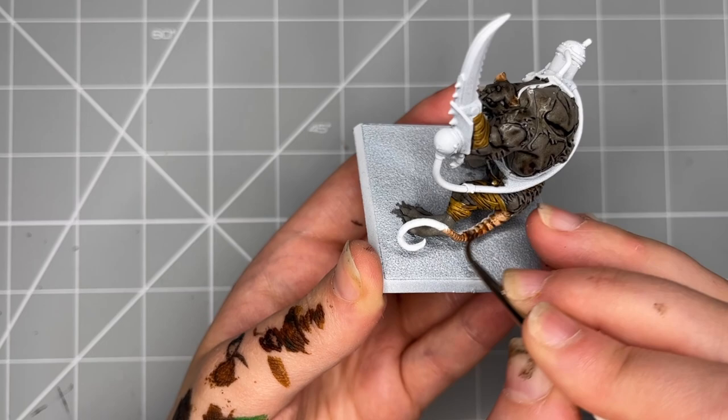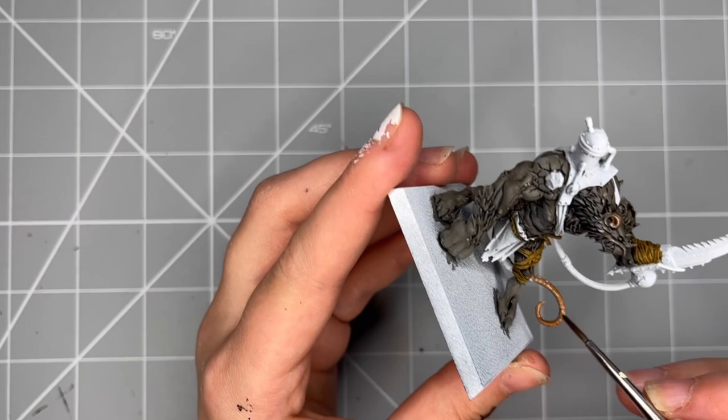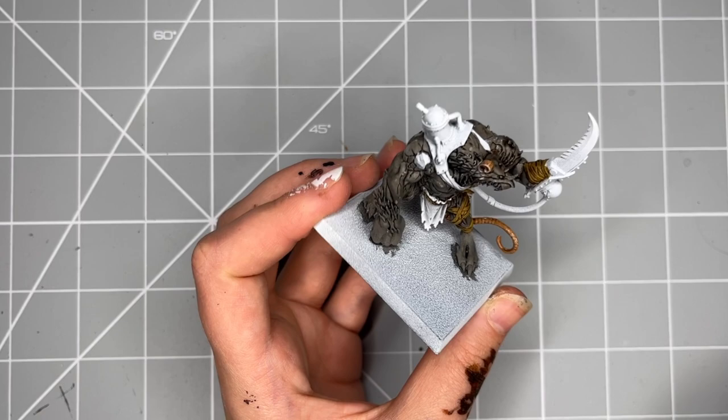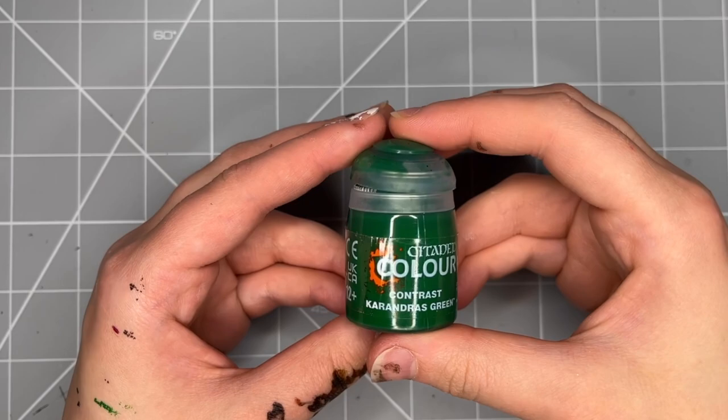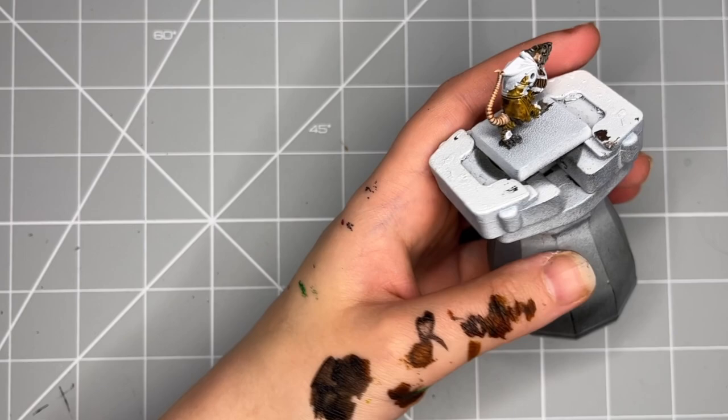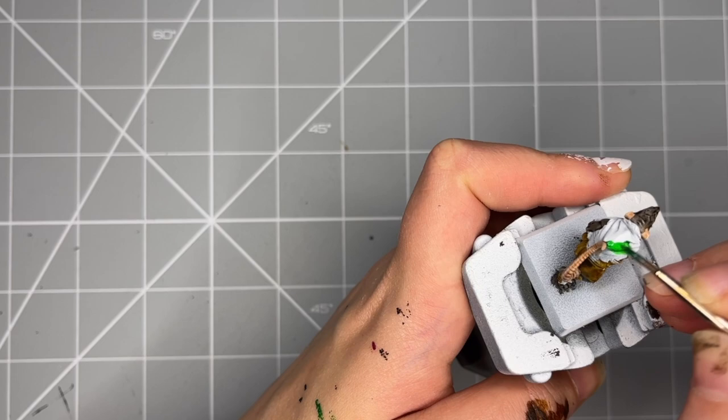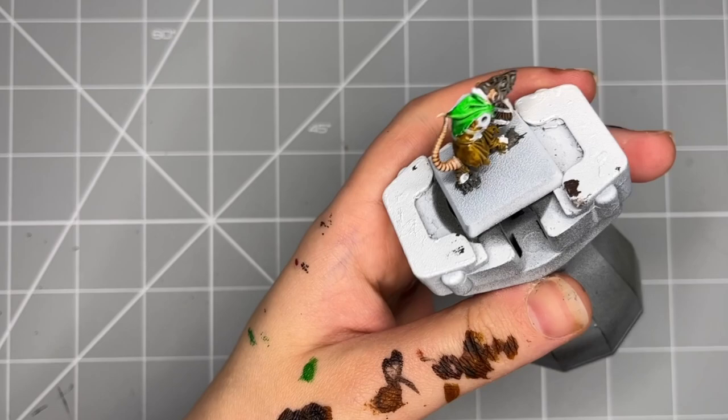After this we are going to be moving onto our green. This is going to really tie the whole project together and I did struggle to pick my green, but in the end we ended up with—oh my god I'm going to butcher this—Karandras, oh no. You can see it, you know what that is. We're going to be putting this all over those hoods as well as anything else we want to pop with this fluorescent green color.